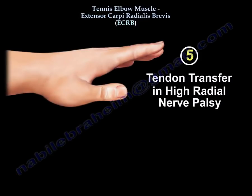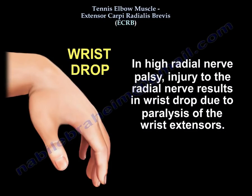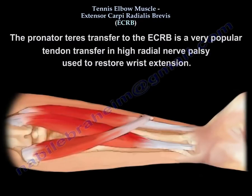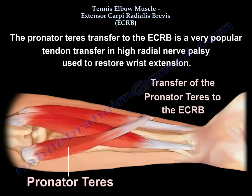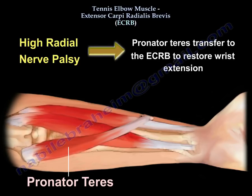Number 5: tendon transfer in high radial nerve palsy. In high radial nerve palsy, injury to the radial nerve results in wrist drop due to paralysis of the wrist extensors. The pronator teres transfer to the extensor carboidialis previs is a very popular tendon transfer in high radial nerve palsy and it is used to restore wrist extension.